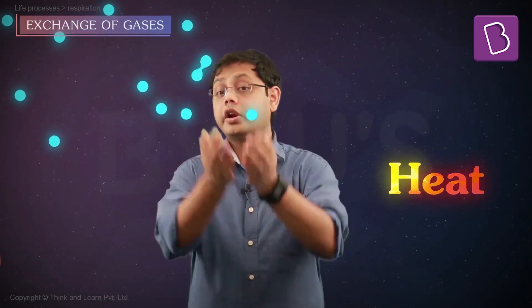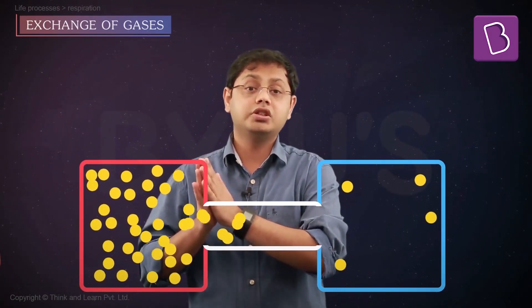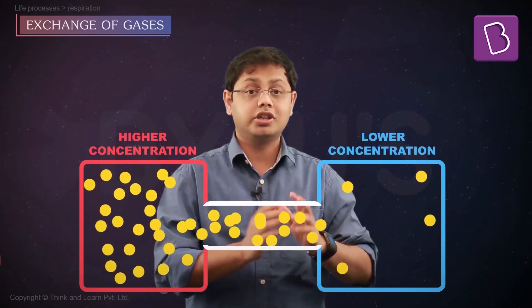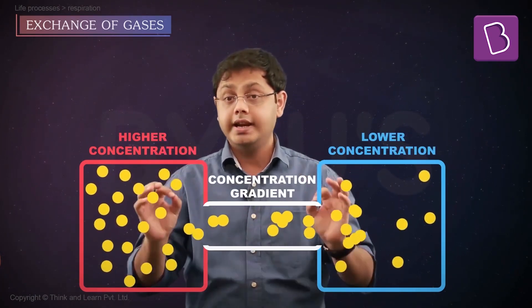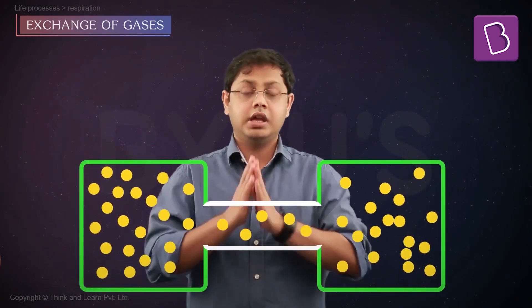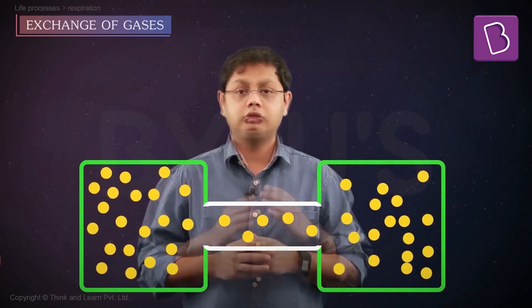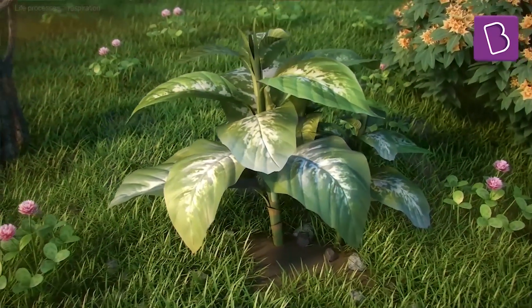Diffusion is the important word here. But what does it actually mean? Whenever there is an imbalance in any property across two places — it can be heat, concentration of molecules, or even pressure — nature tries its best to equalize this imbalance. If the balance is being brought about in the concentration of molecules, it is called diffusion. As you can see, molecules move from a region of higher concentration to a region of lower concentration along the concentration gradient, until the gradient no longer exists. This process is called diffusion.